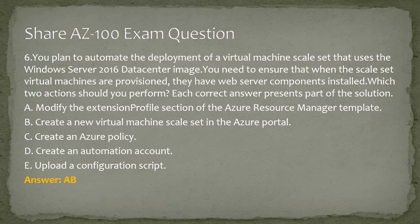Question 6. You plan to automate the deployment of a virtual machine scale set that uses the Windows Server 2016 Datacenter image. You need to ensure that when the scale set virtual machines are provisioned, they have web server components installed. Which two actions should you perform? Each correct answer presents part of the solution. A. Modify the extension profile section of the Azure Resource Manager template. B. Create a new virtual machine scale set in the Azure portal. C. Create an Azure policy. D. Create an automation account. E. Upload a configuration script. Answer: A, B.